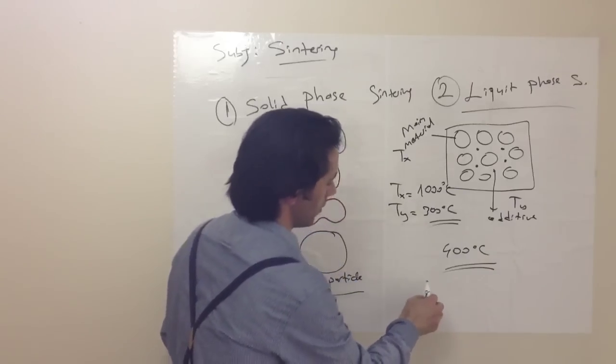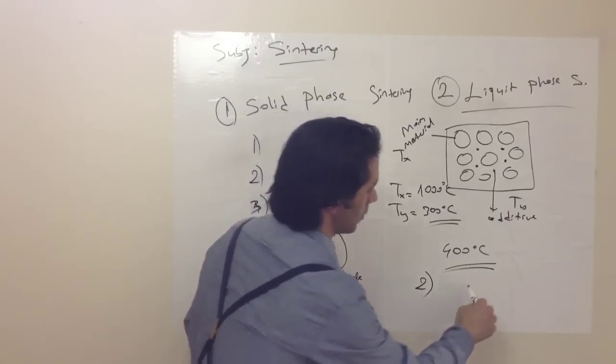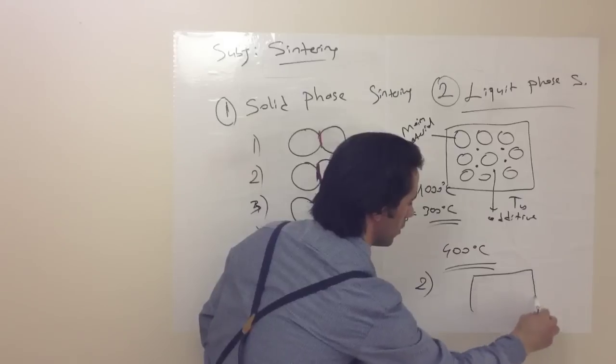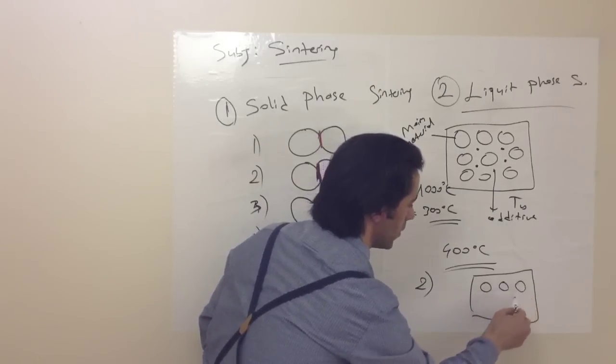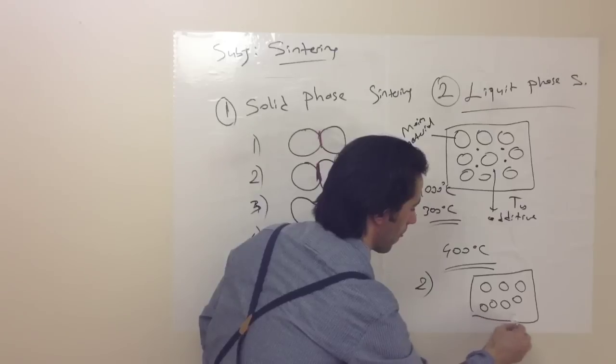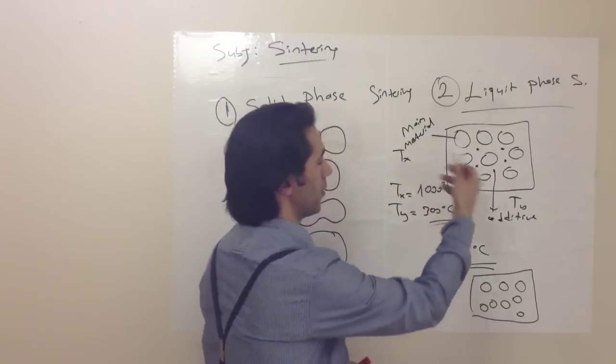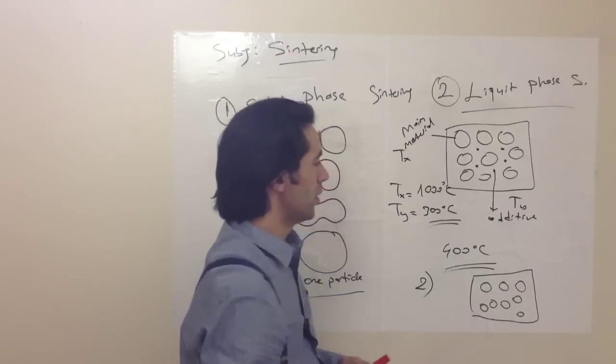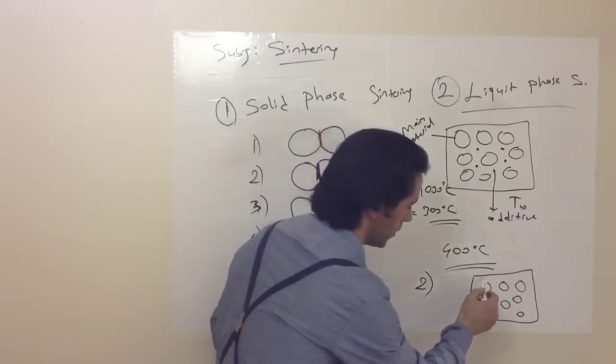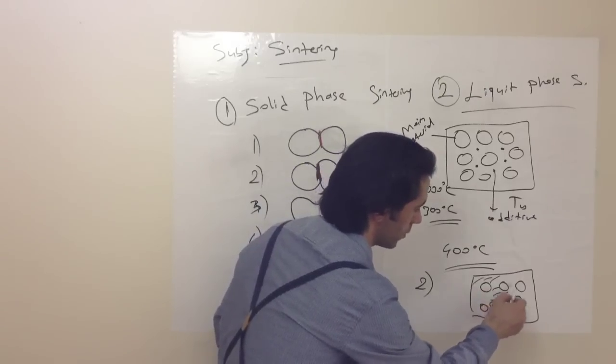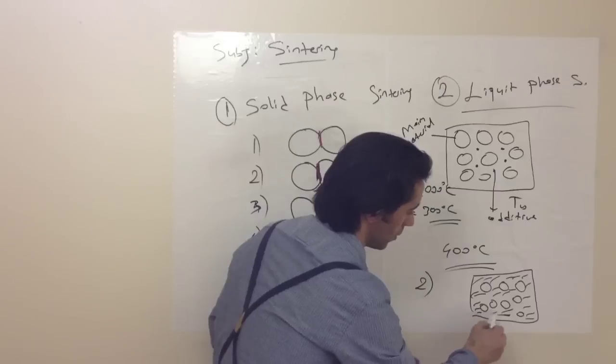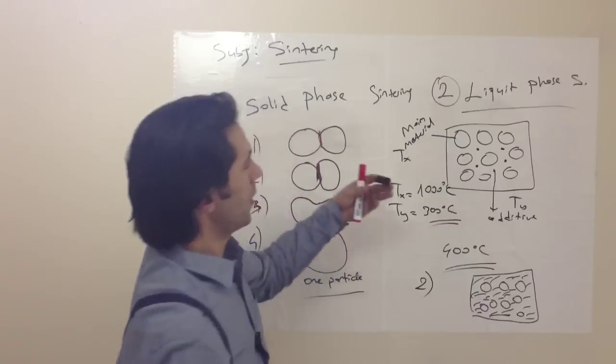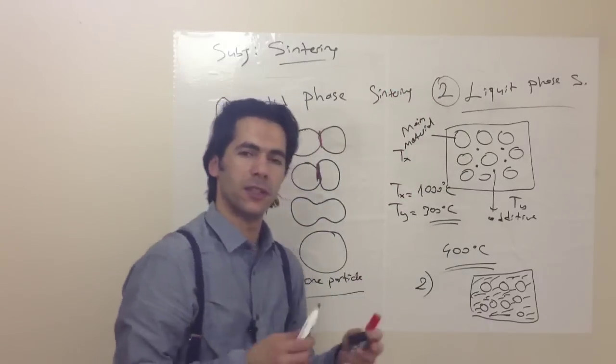So, the second step. I draw here simply. Our first main material will be the same, but our additive materials will be melted. So that means they will surround the structure. That is liquid phase sintering.